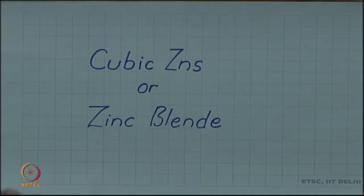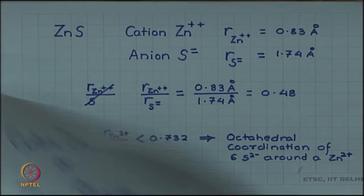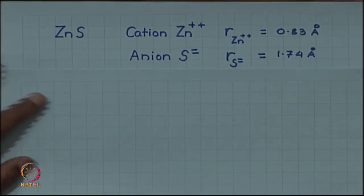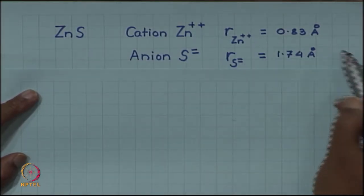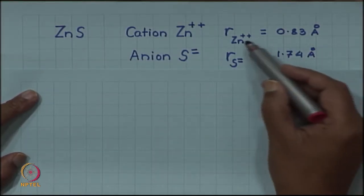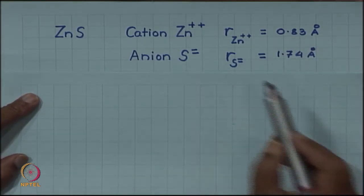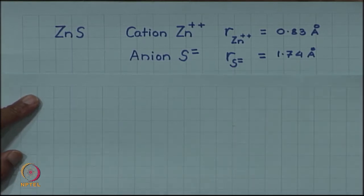Let us consider the structure of cubic zinc sulphide, also known as zinc blend. In this structure, we have the cation zinc 2+ which has a radius of 0.883 angstrom, and the anion sulphide with a radius of 1.74 angstrom.